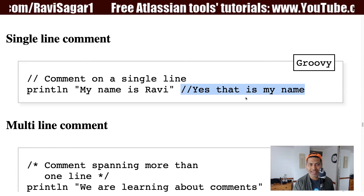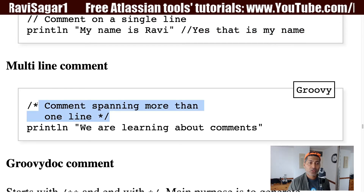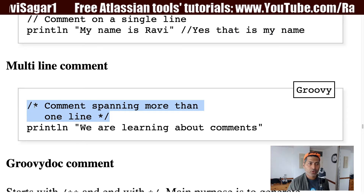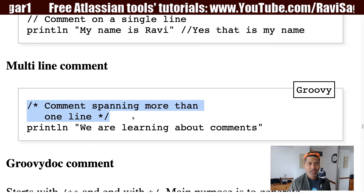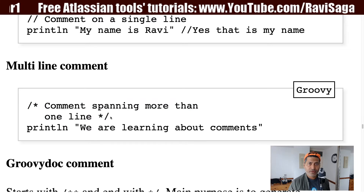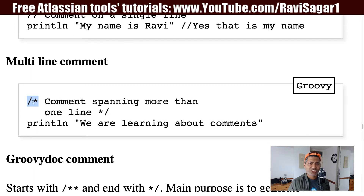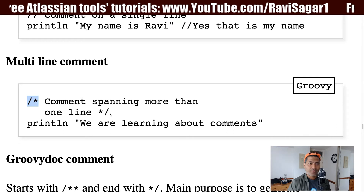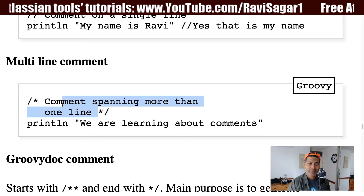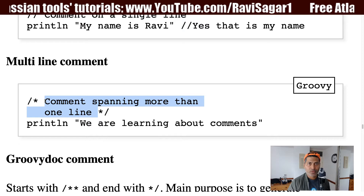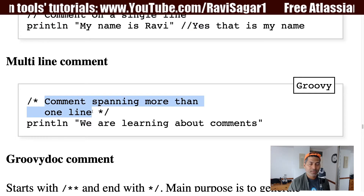You can't always use single-line comments — sometimes you need multiple lines, which is why you have the multi-line comment. You can span your comment across multiple lines. You start with a forward slash followed by an asterisk, and end with an asterisk followed by a forward slash. Anything in between will be ignored and will not be executed.